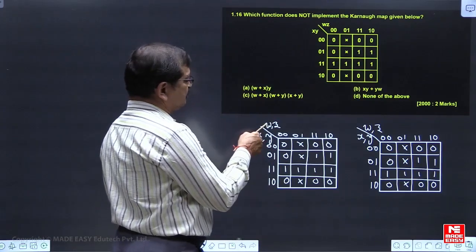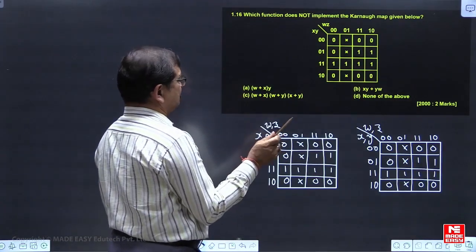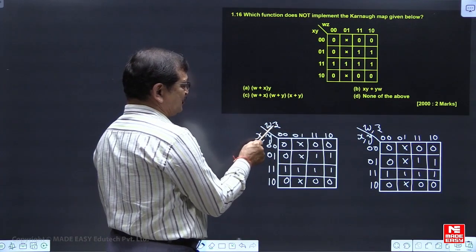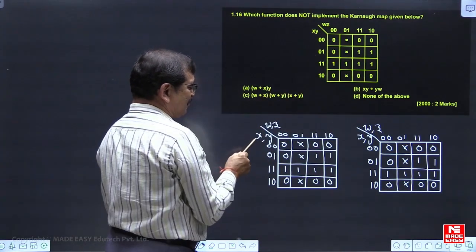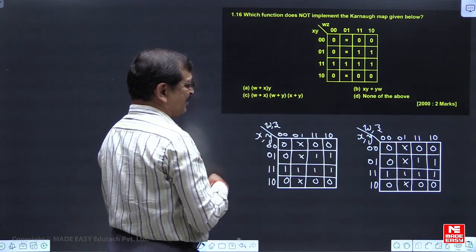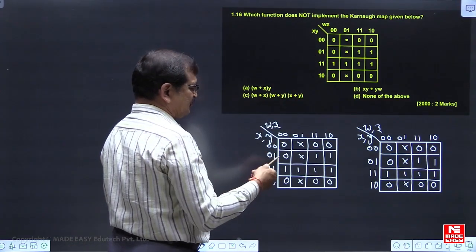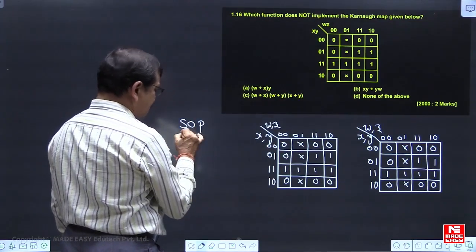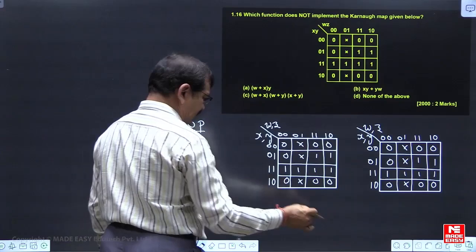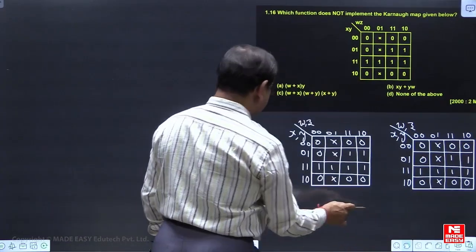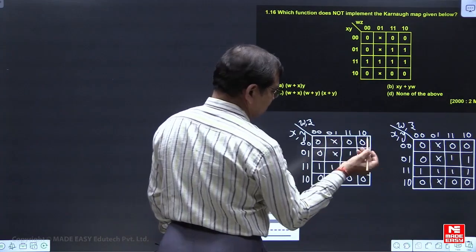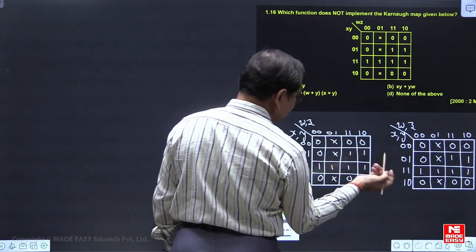The function has the variables W, X, Y, Z. So here, column headings W, Z, row headings are X and Y. Suppose we are writing SOP expression for this. If you want to read the SOP expression, we are looking here to the minterms. So you are basically referring to the minterms.